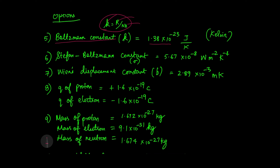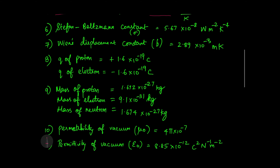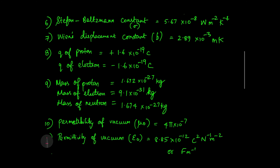Nₐ is the Avogadro number. Stefan-Boltzmann constant is represented by sigma, and its value is 5.67 × 10 power minus 8 watt meter minus 2 kelvin minus 4.